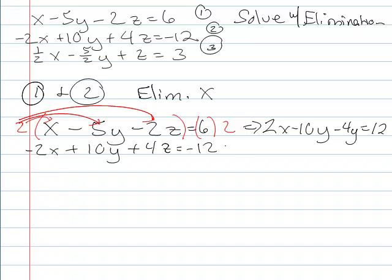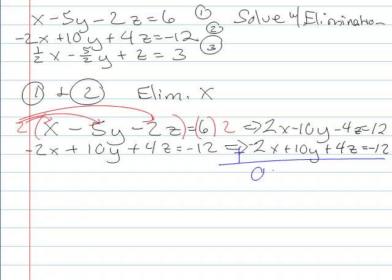which is going to be a problem because over here, I'll write minus 2x plus 10y—that was supposed to be a z—plus 4z equals negative 12. So if I want to go in here and add them straight down, I got 0 plus 0 plus 0 equals 0.